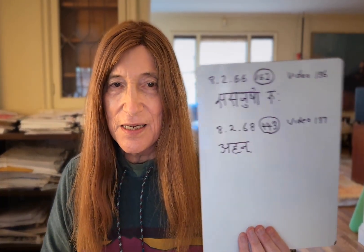The sutra begins with the word 'atra,' meaning 'here.' The question is: where is 'here'? Here refers to the continuation of the story we've begun earlier about 'ru,' so it is in the context of enjoining ru. Just to refresh our memories a little bit...